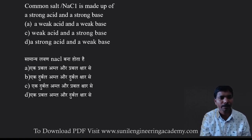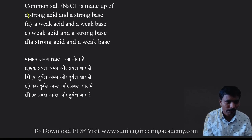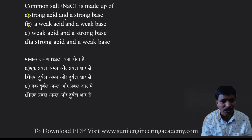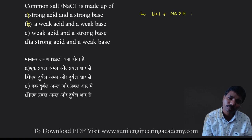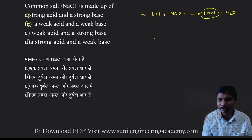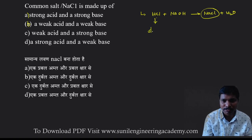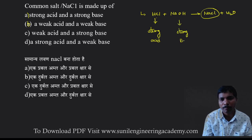Common salt, NaCl, is made up of which type of acid and base? They have given options: strong acid + strong base, weak acid + strong base, etc. We know that when HCl reacts with NaOH, you get NaCl + H2O. HCl is a strong acid and NaOH is a strong base. So NaCl is formed by the reaction of a strong acid and a strong base.